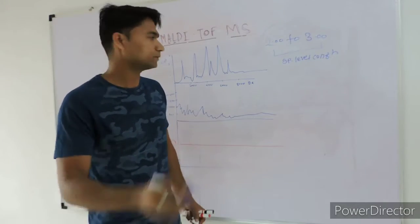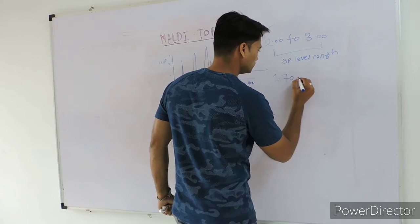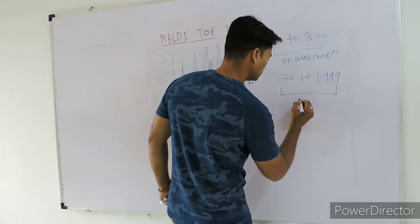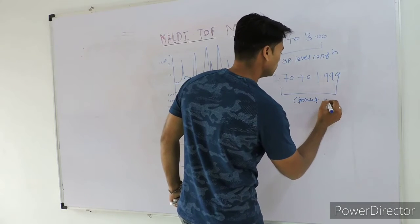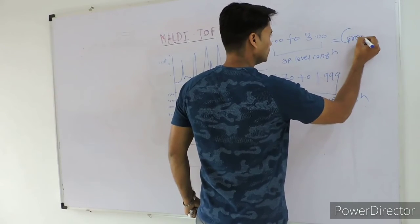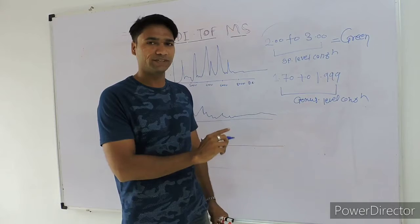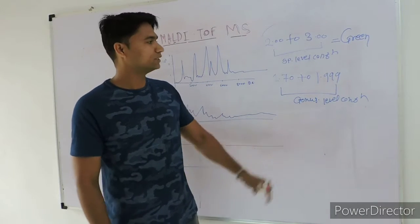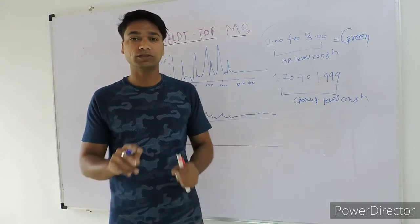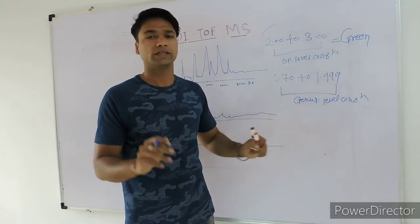If your score value is between 1.70 and 1.999, that is a sign of genus-level confirmation. Here the color is green — your score value automatically comes in a window where the green color is shown and the score value is in this range, meaning your identification is at the species level. If you have a score value between 1.7 and 1.999, then this color window, the score value window, is yellow. At that time, we can be reliable on the genus level even though MALDI-TOF MS is also giving some best matches with their library.